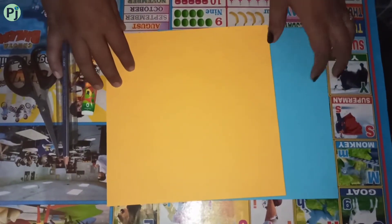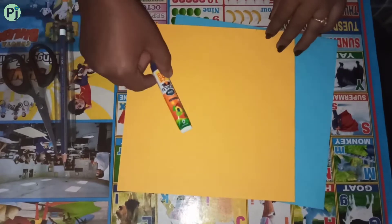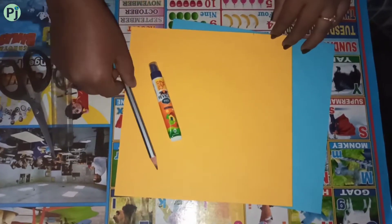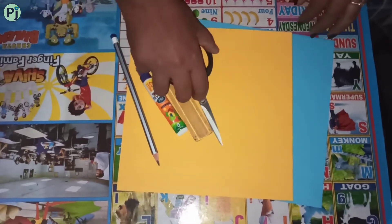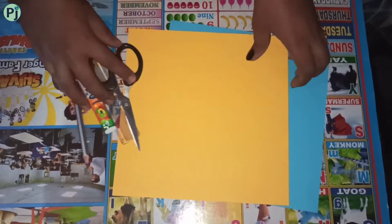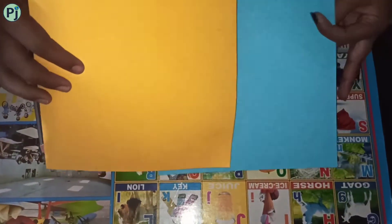Hello children, now this is the time for activity. For this activity you will need a favicol, a pencil, a scale and a pair of scissors. The first thing you will need is papers of different colors. This type of colors you will need to take.